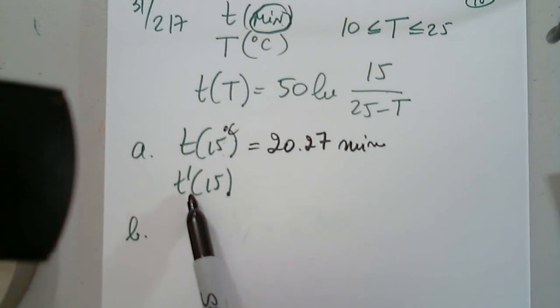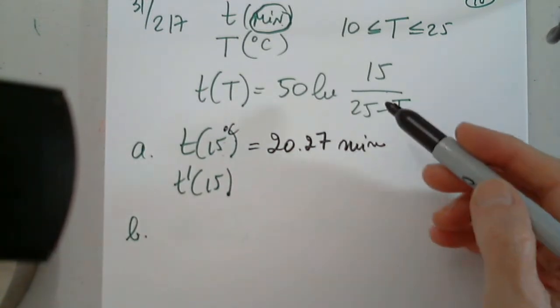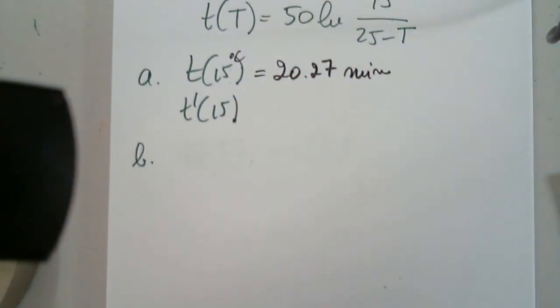What does this mean, first of all? When the temperature is 15 degrees, the time needed is 20.27 minutes. Next, t'(15), but I cannot determine this before I find t'. So I have to find t' first.